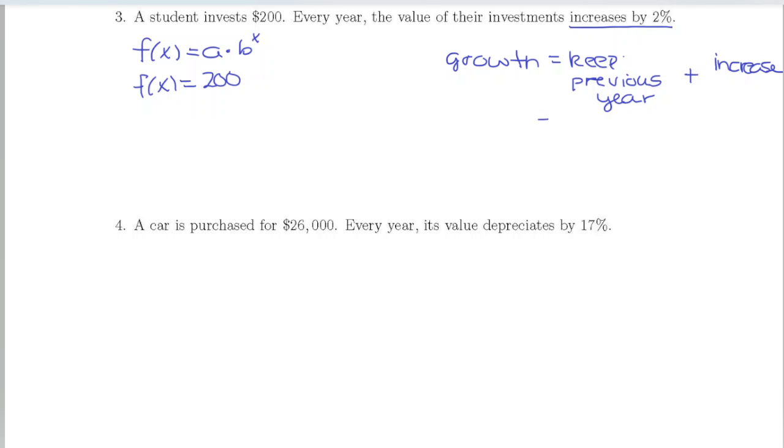Now the previous year is always going to be 100% because you're comparing it to itself. You're keeping 100% of the initial investment, and then our increase is that 2%, so we're going to end up with 102%. That's our growth.